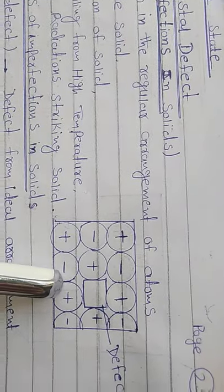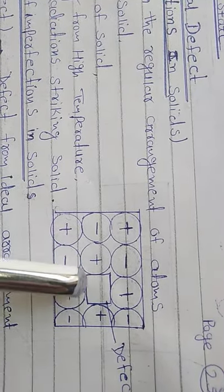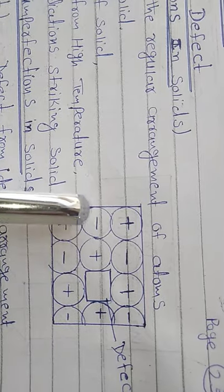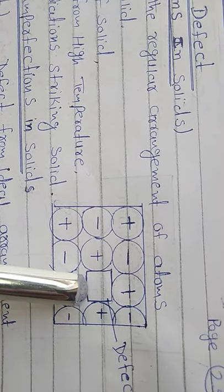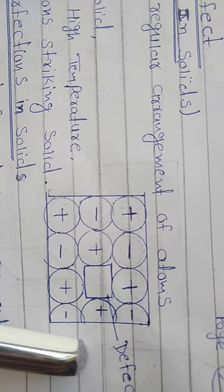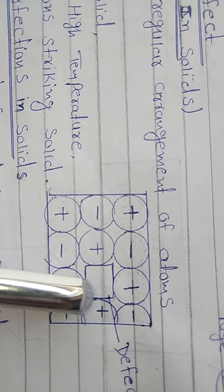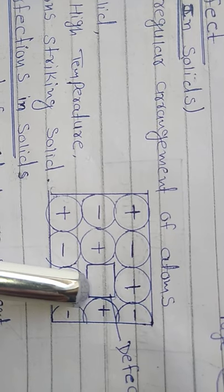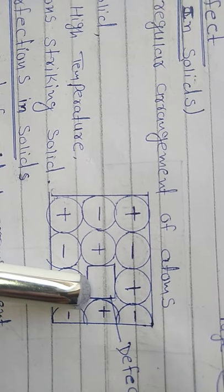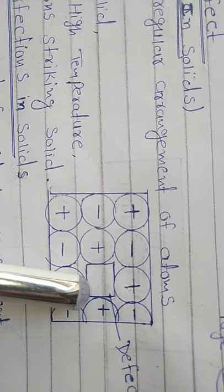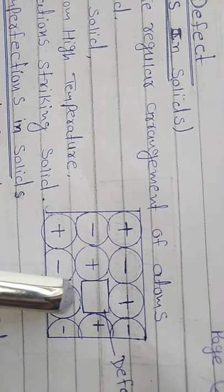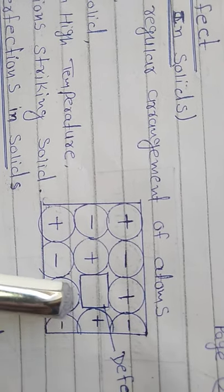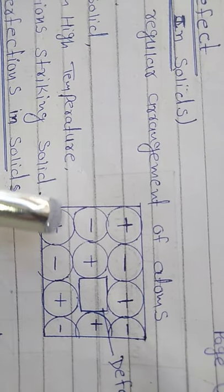Here we look at an ionic crystal with a regular arrangement, and then we look at it with a disturbance — a crystal defect or imperfection in solids. What happens is that a cation or anion moves from its position and disturbs or goes to other parts, and this can be a reason or cause of the defect.